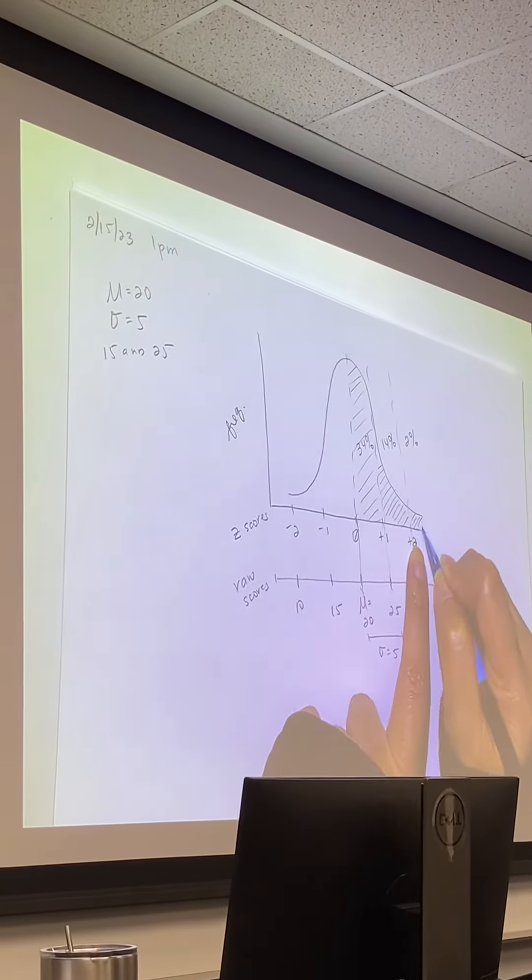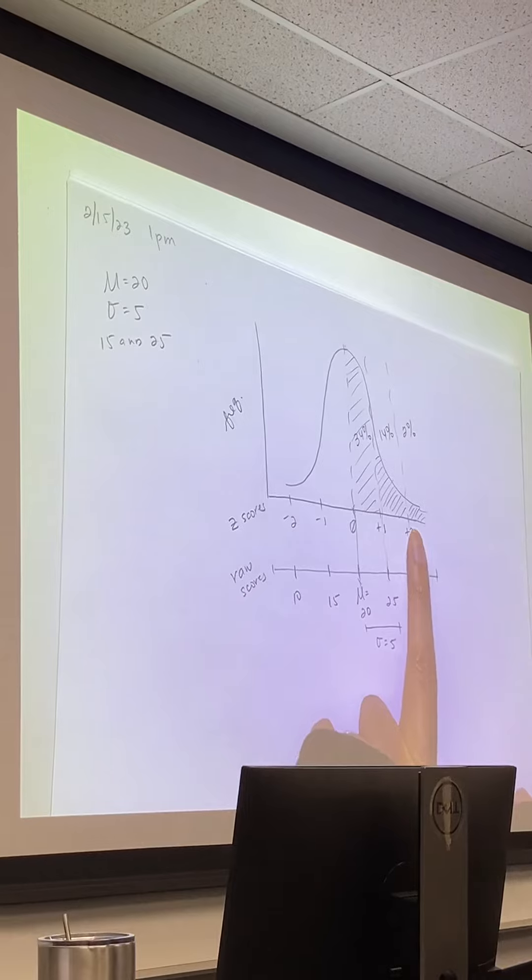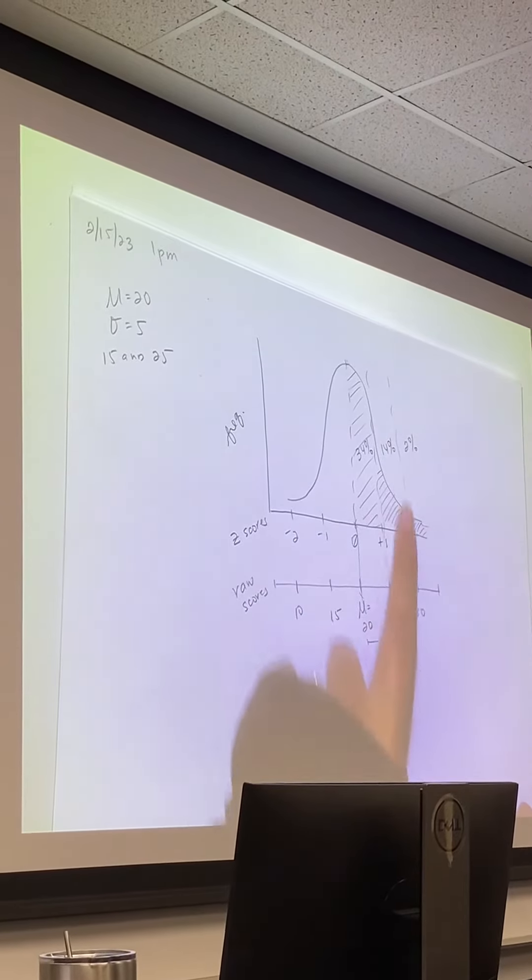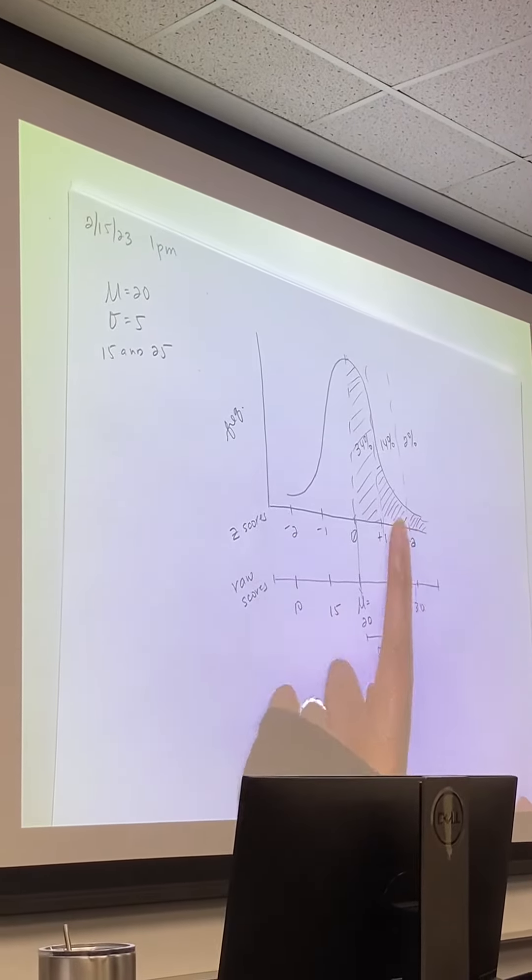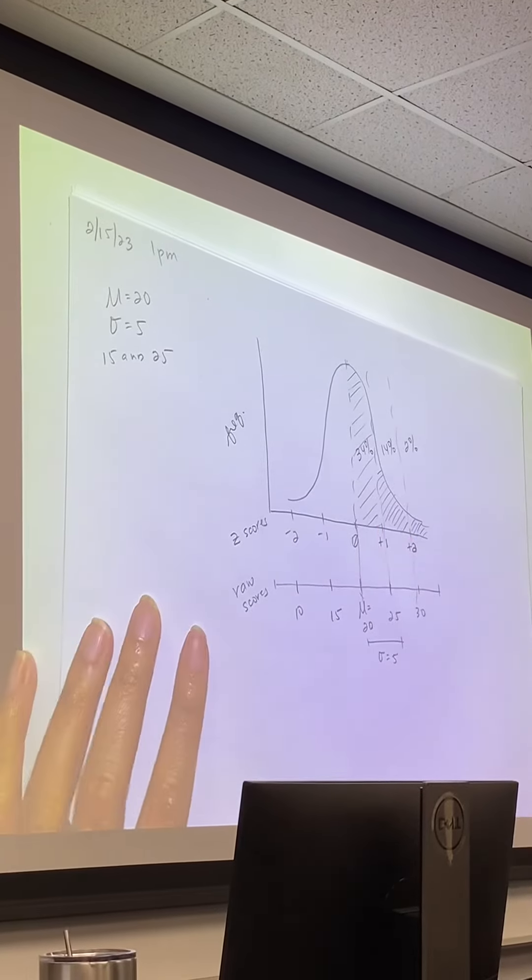And beyond positive 2, there's only very few scores beyond positive 2 and over. So that's only 2%. So think of it that way going forward so that you'll have an easier understanding of hypothesis testing next time.